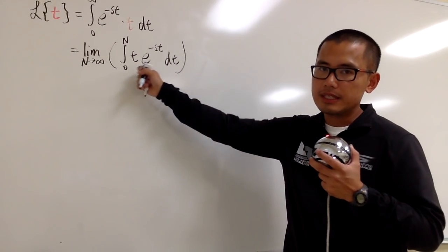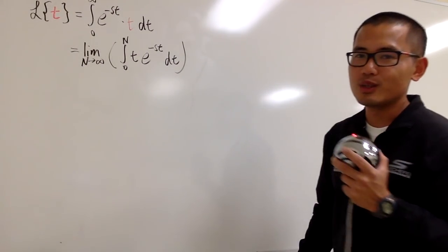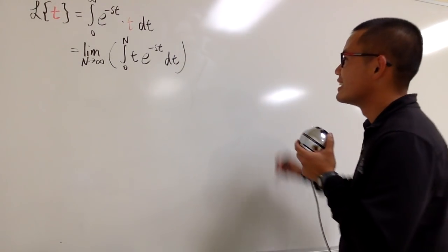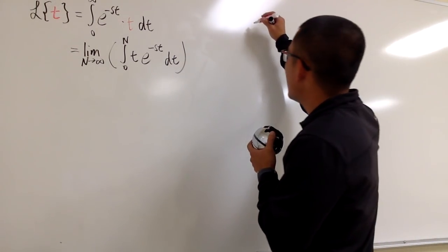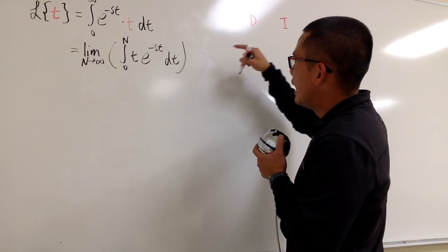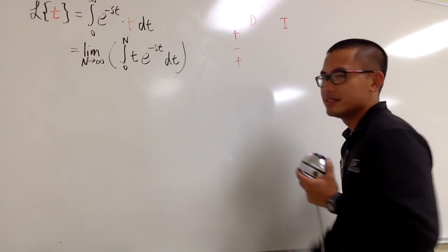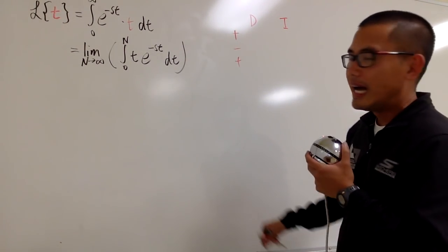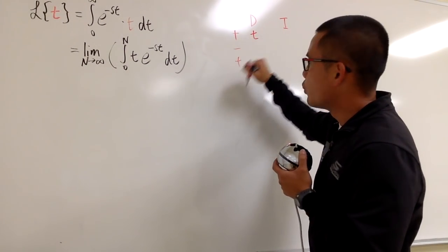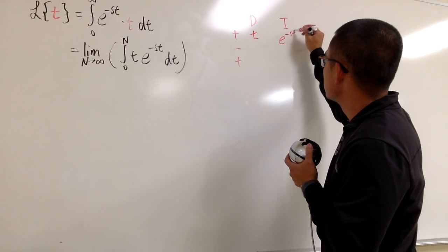To integrate, we have to use integration by parts. We do it by the DI method. On the side, let's put down the D and the I columns, with plus, minus, plus signs. I'm going to differentiate t and integrate e to the negative st.